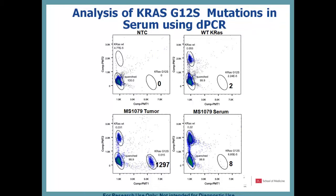This one is a little better — the KRAS G12S assay. The no-template control is very, very clean. The wild-type is also very clean. In the patient serum sample we've got 8 positive droplets in the positive gate, and I'd be more comfortable with this one. I obviously want to see replicates, but we're saving the precious serum DNA until we've cleaned up the assay. We're hopeful this will turn out to be real — it corresponds to a 0.04% allele frequency if true.